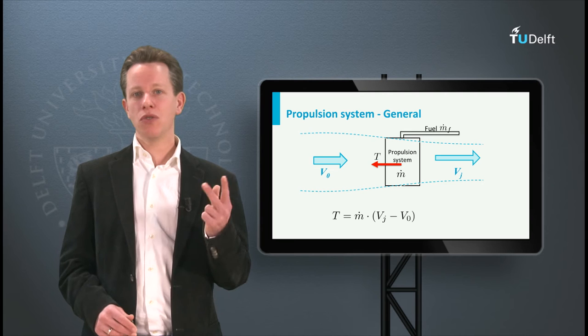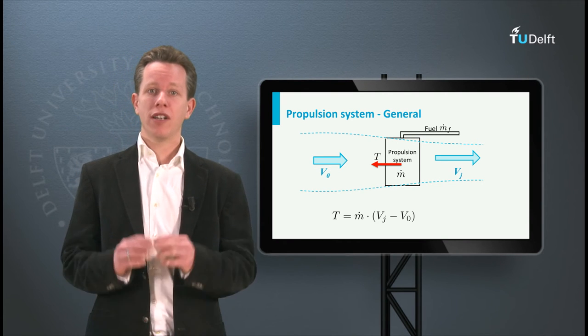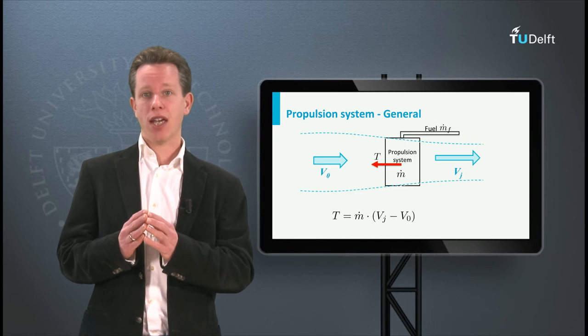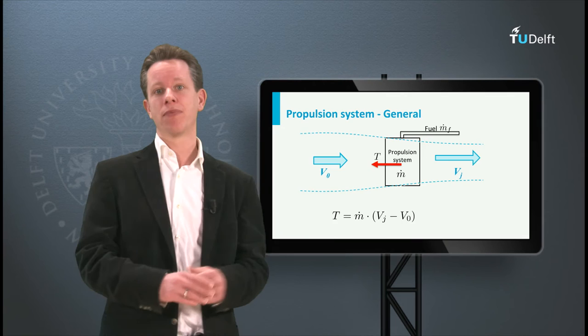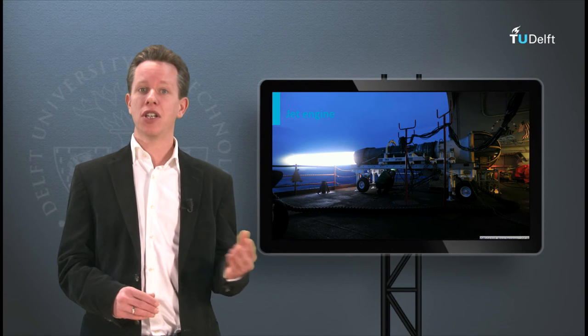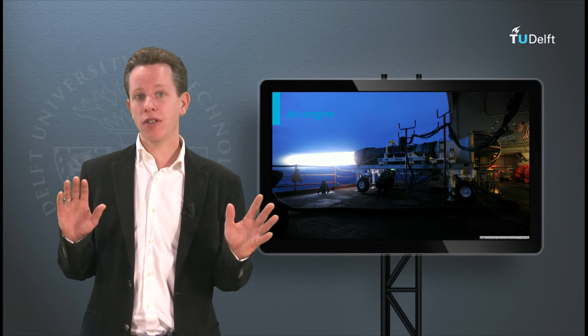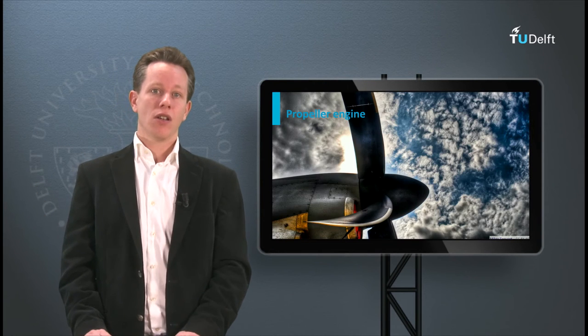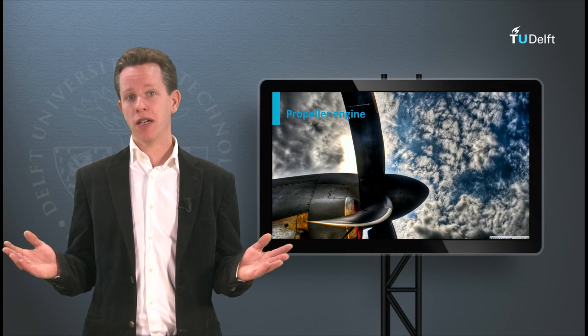In essence, there are two fundamental options to create the same amount of thrust. One can take a little bit of air m-dot in the equation and accelerate it to a high jet velocity, and this is typically done by jet engines. Or one can take a large mass of air and only give it a small acceleration, which is typically done by propellers. So which of these options is better?